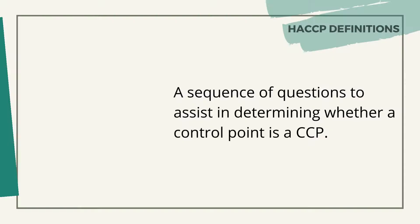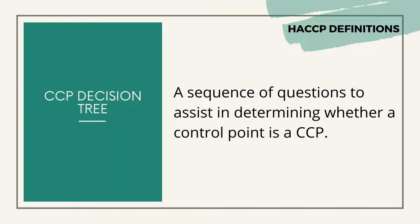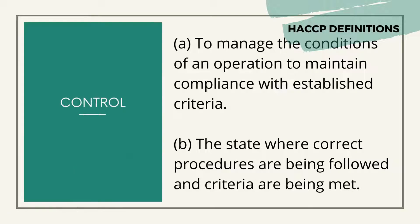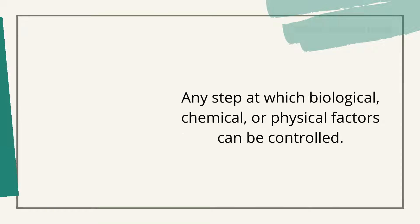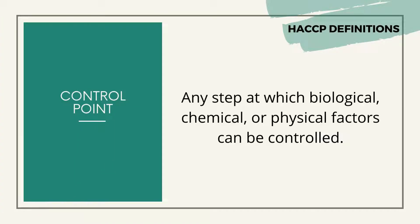Definitions. CCP Decision Tree: a sequence of questions to assist in determining whether a control point is a CCP. Control: (a) to manage the conditions of an operation to maintain compliance with established criteria; (b) the state where correct procedures are being followed and criteria are being met. Control Measure: any action or activity that can be used to prevent, eliminate, or reduce a significant hazard. Control Point: any step at which biological, chemical, or physical factors can be controlled.